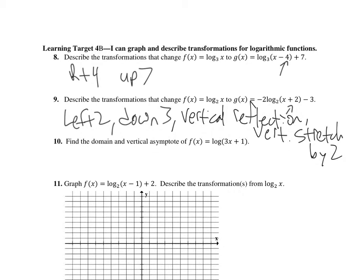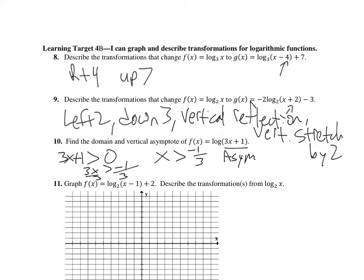The domain of a logarithm: three x plus one has to be greater than zero. So we subtract one from both sides — three x is greater than negative one. Divide by three, and x is greater than negative one-third. Remember to watch out: when you divide by a negative number, you'll have to flip that inequality.